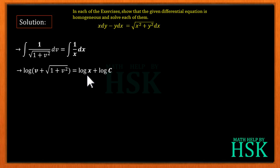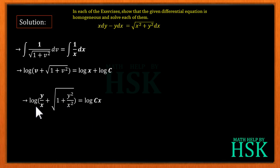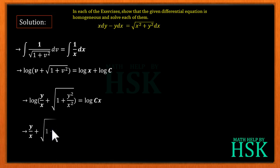Replacing v = y/x, we get log(y/x + √(1 + y²/x²)) = log x + log c = log(cx). Since log of something equals log of something implies the arguments are equal, we get y/x + √(1 + y²/x²) = cx.